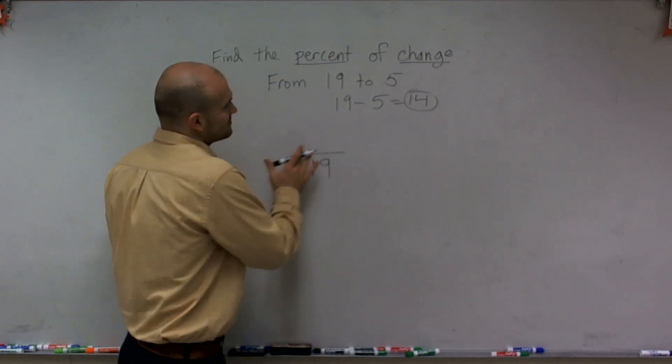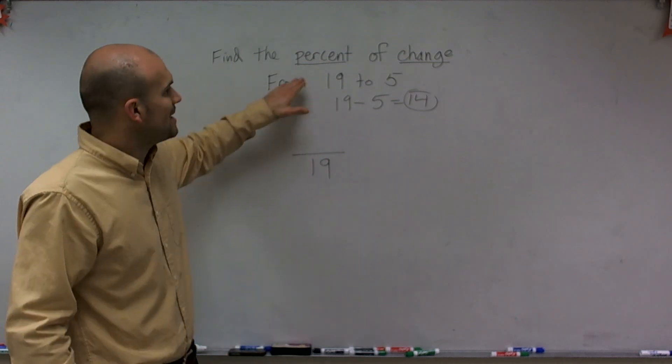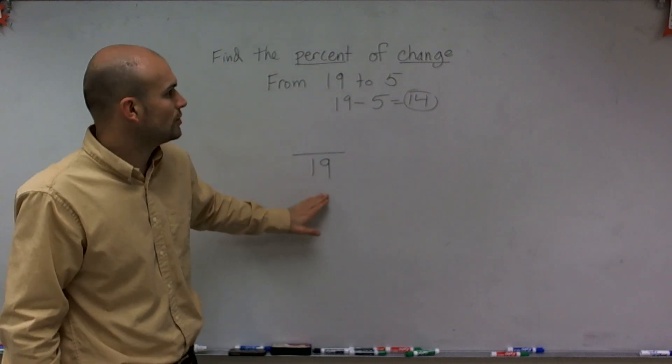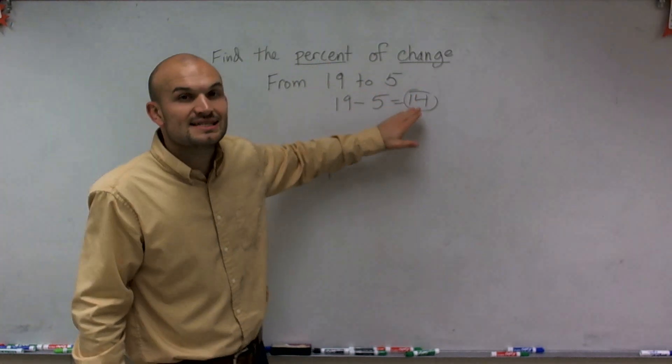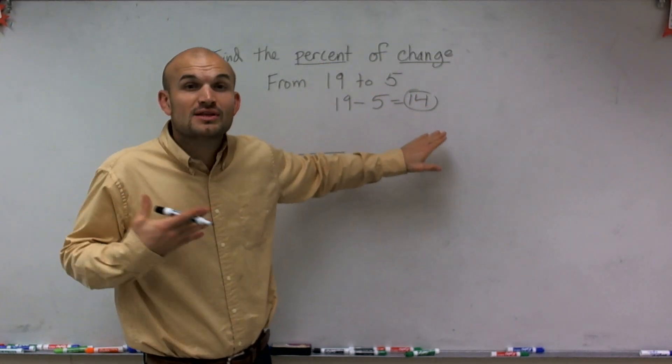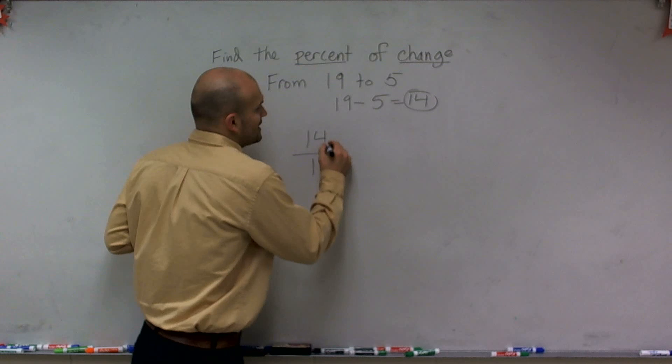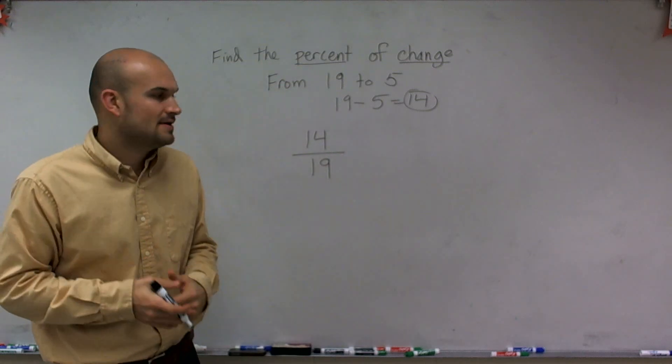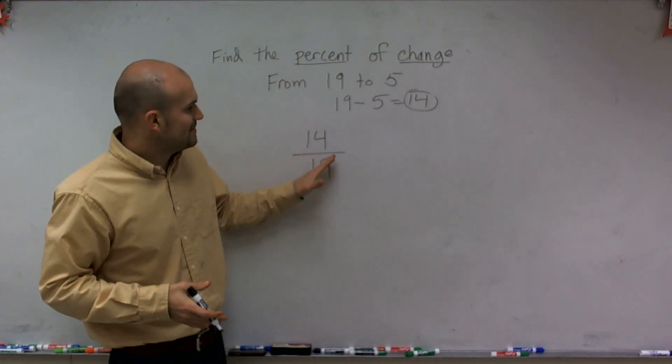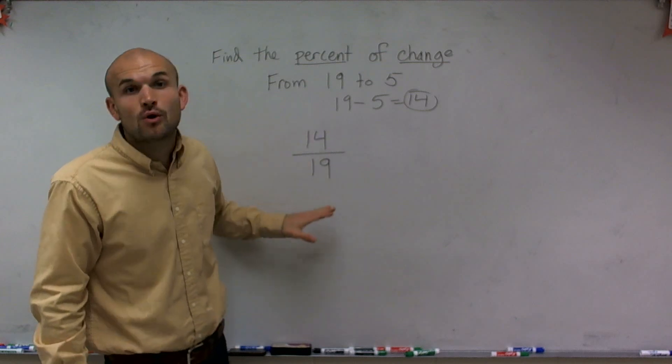So what we're going to look at is out of the total amount of 19, right? 19 is our total. The number of sticks or whatever we're talking about, the number that changed is going to be 14. So I'm going to create a ratio to represent that. So what that means is I had a change of 14 out of a total of 19.